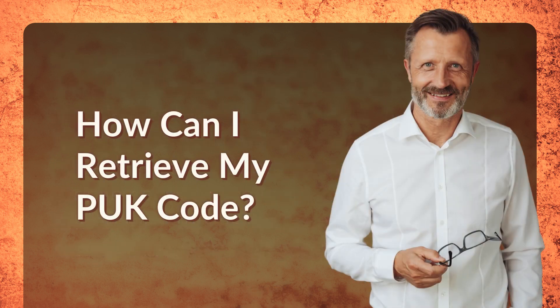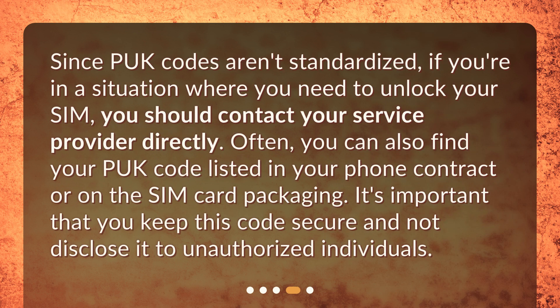How can I retrieve my PUK code? Since PUK codes aren't standardized, if you're in a situation where you need to unlock your SIM, you should contact your service provider directly. Often, you can also find your PUK code listed in your phone contract or on the SIM card packaging. It's important that you keep this code secure and not disclose it to unauthorized individuals.